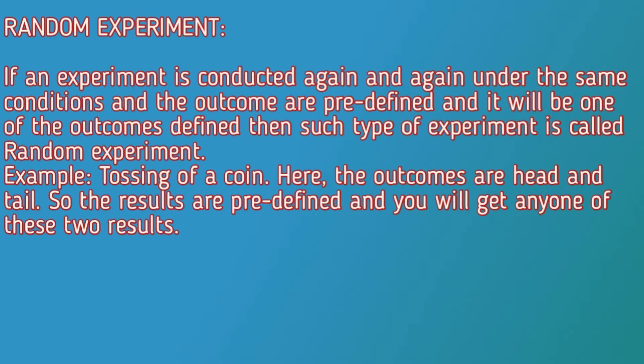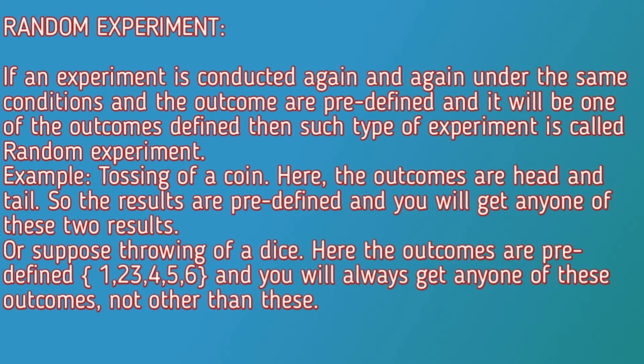Or suppose throwing of a dice — here outcomes are 1, 2, 3, 4, 5, 6. You will always get the same outcomes. Suppose you are tossing a coin in Assam or tossing in Delhi, then it will not give you any different result. It will always give you the same result irrespective of any location.